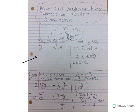The first thing we do is write the problem and we have 3 and 3 fourths minus 2 and 1 third.